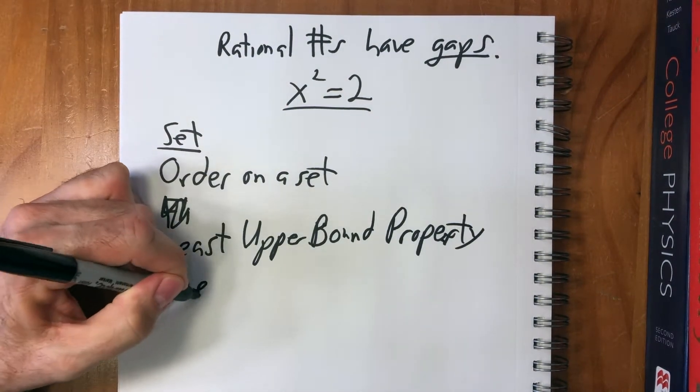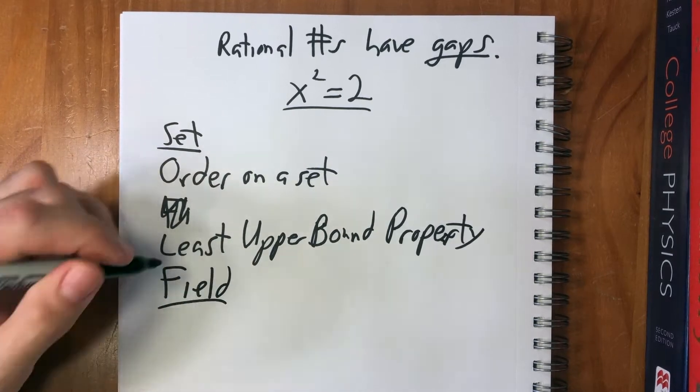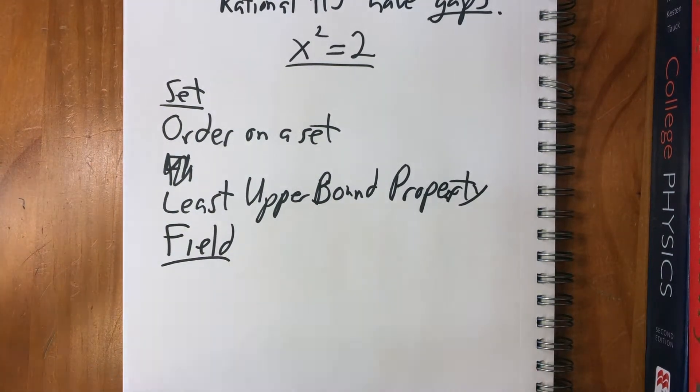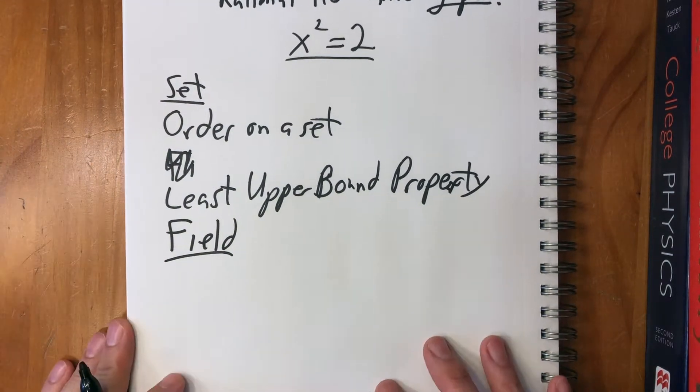Then the last few videos we've been looking at what a field is, what the field axioms are, and all of the familiar rules that go along with that, like x plus zero equals x, and so on.